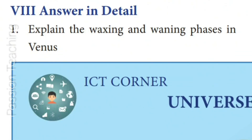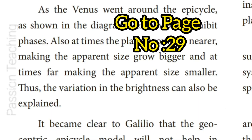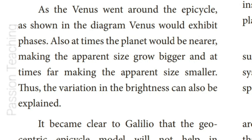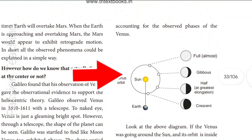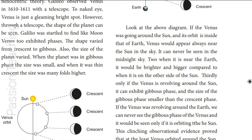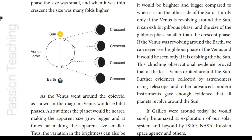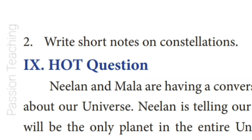Eighth Roman Letter: Answer in Detail. Question 1: Explain the waxing and waning phases of Venus. Answer from page 29: As Venus went around the Sun, its apparent size became smaller. If Venus was going around the Sun and orbiting it, that phase would be close. The answer is given in detail from the page.